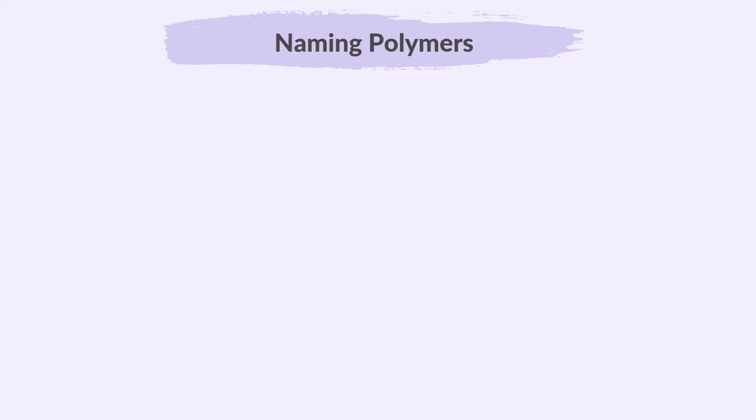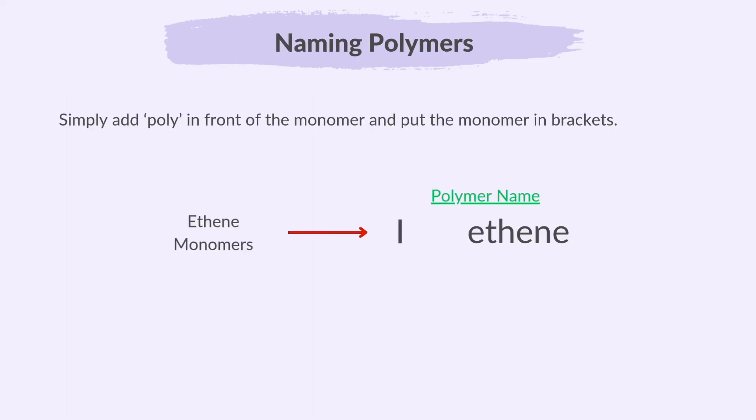How do we name the polymer? Simply add 'poly' in front of the monomer name and put the monomer in brackets. For example: polyethene.